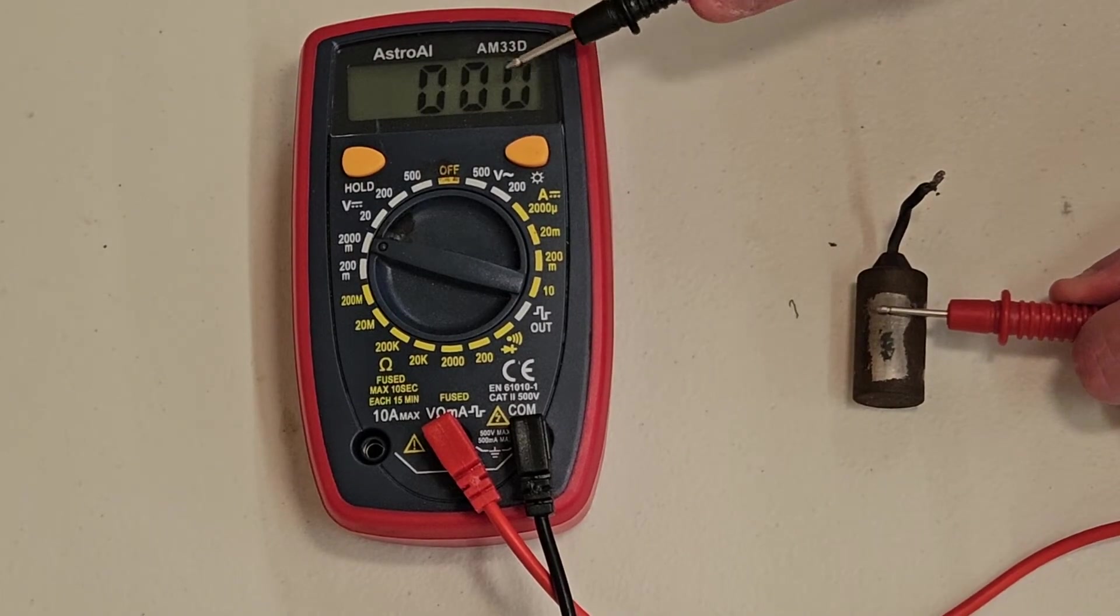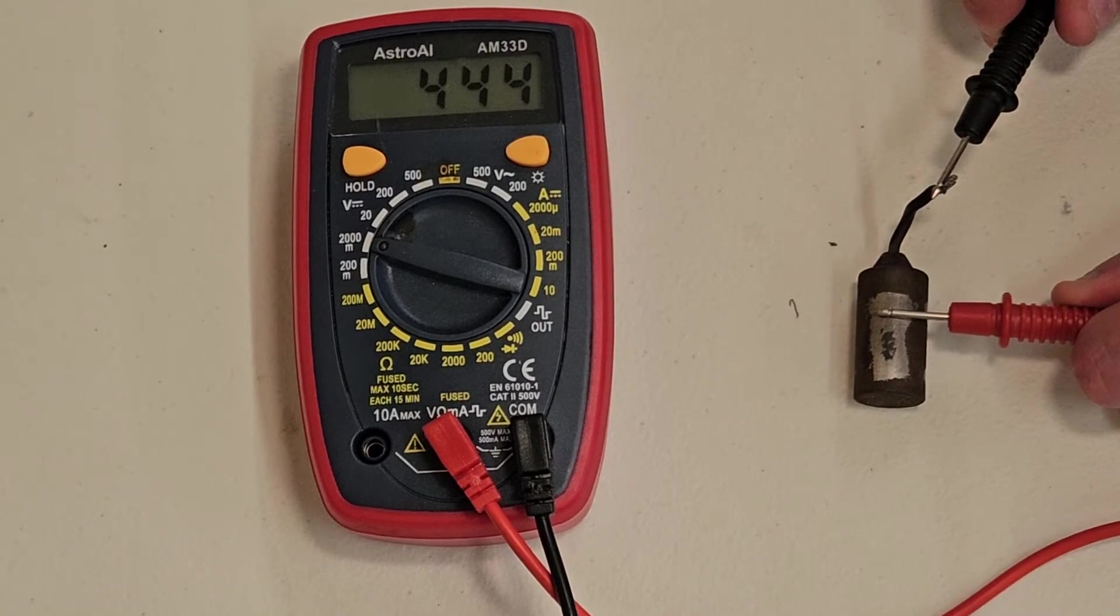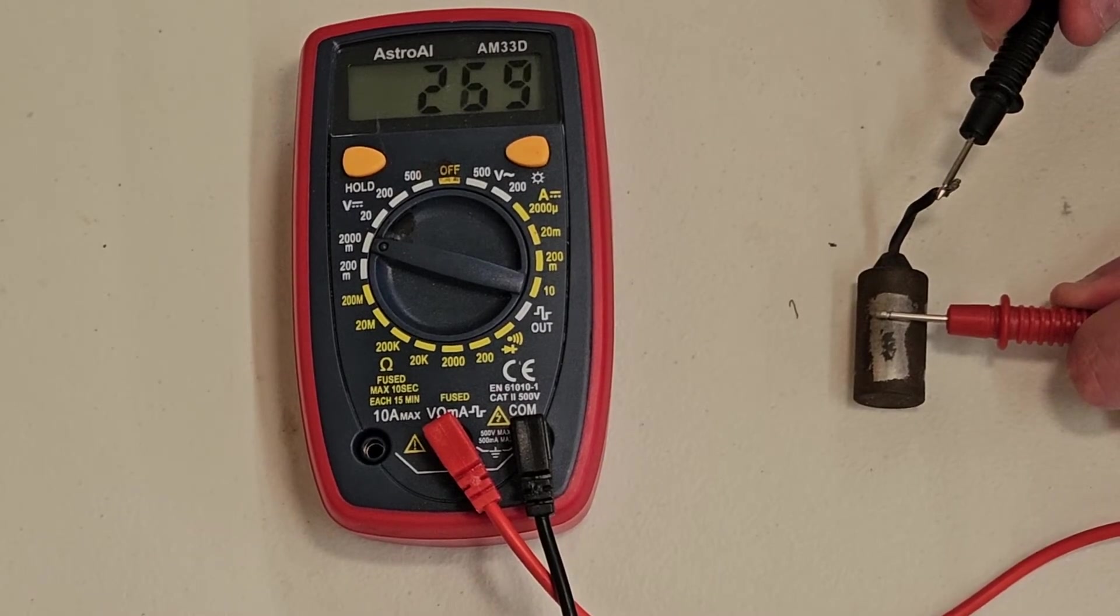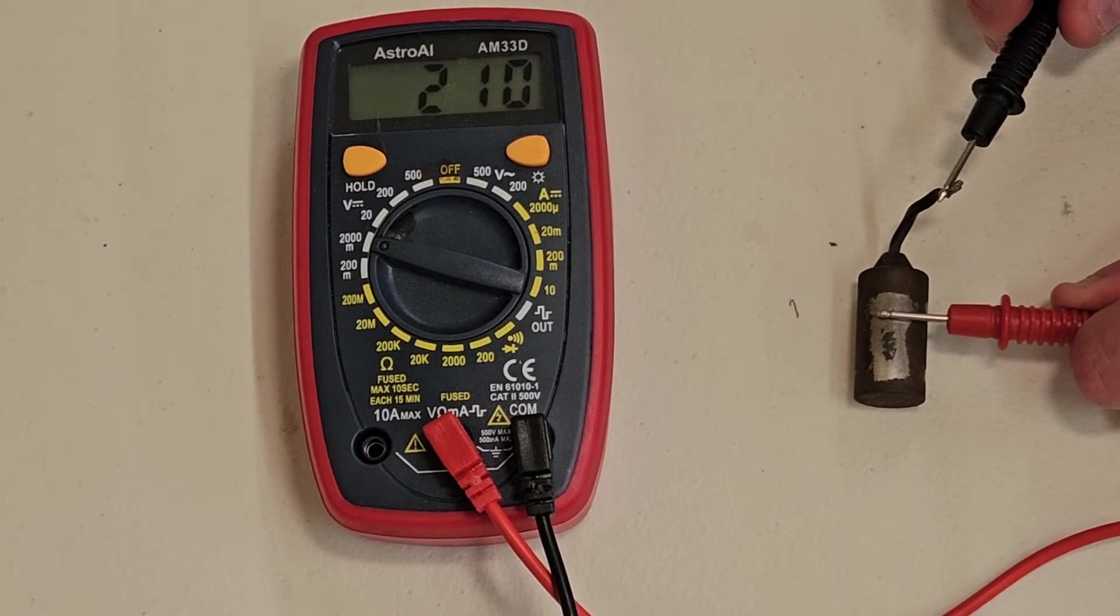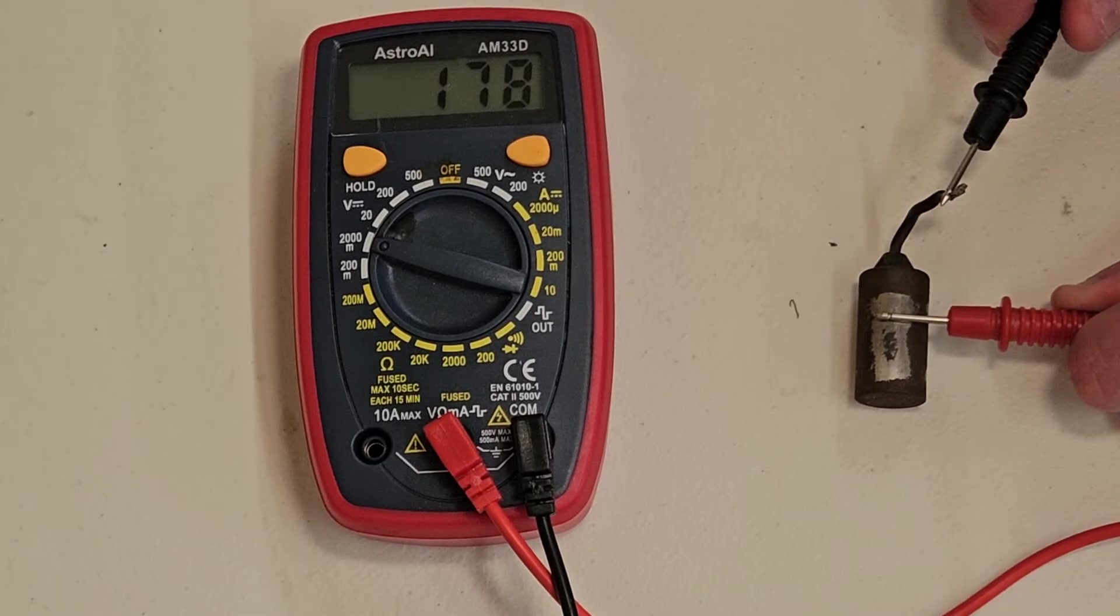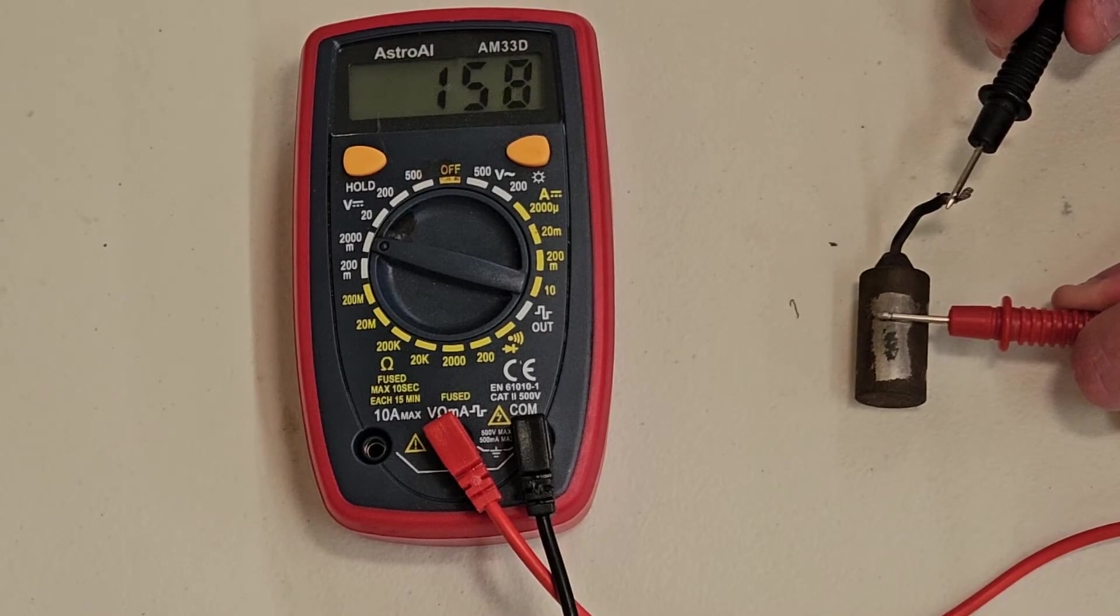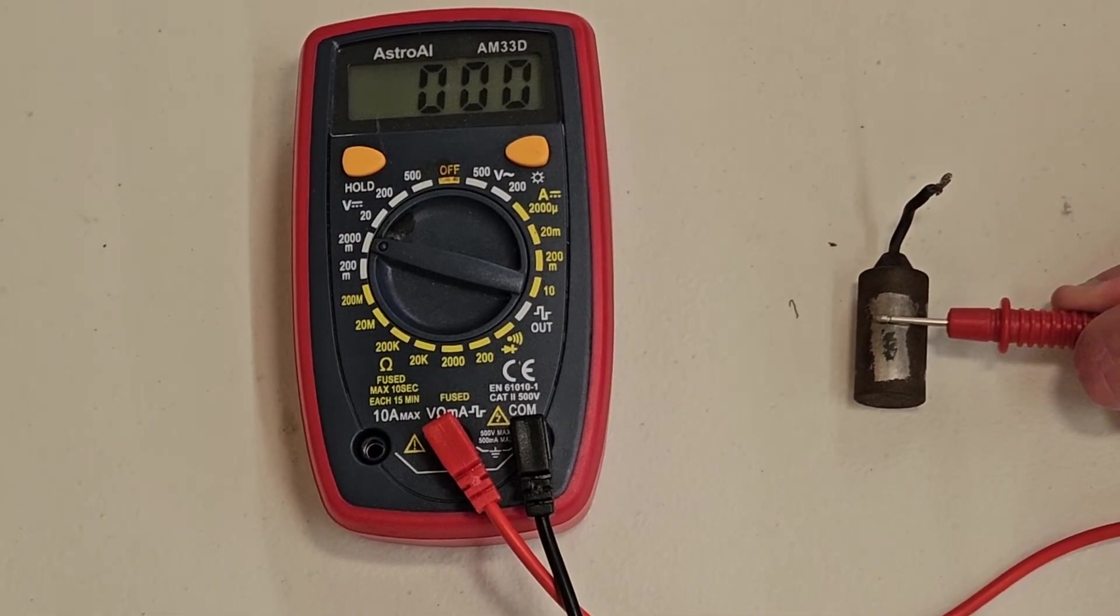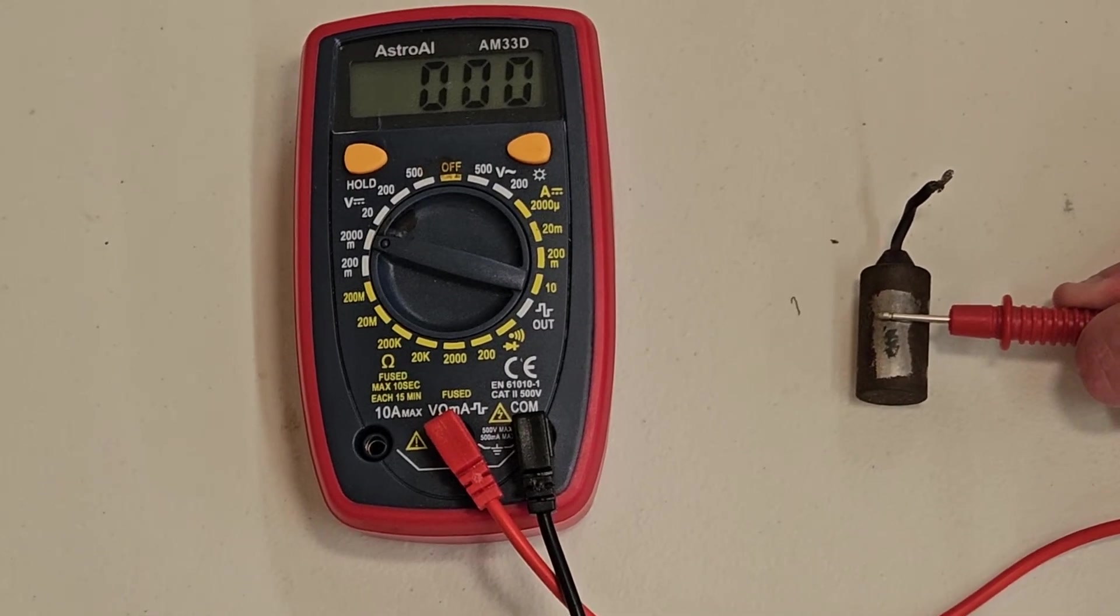We should see a pretty fast drop at the beginning. As you can see, we're dropping right now. This is technically discharging the capacitor. We'll stop at about 150, and we'll test how well this thing holds the charge. We're at about 150, you can take it off. You can stop at any number you like. Let it sit for a second. This will allow you to see if it's holding a charge.